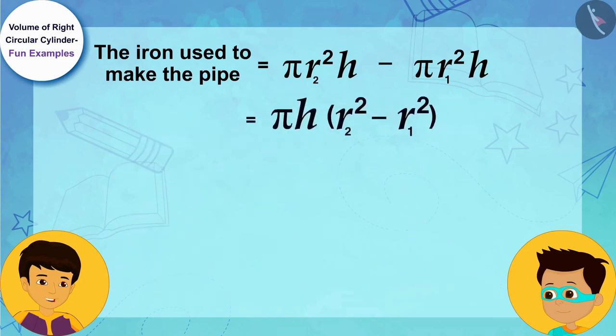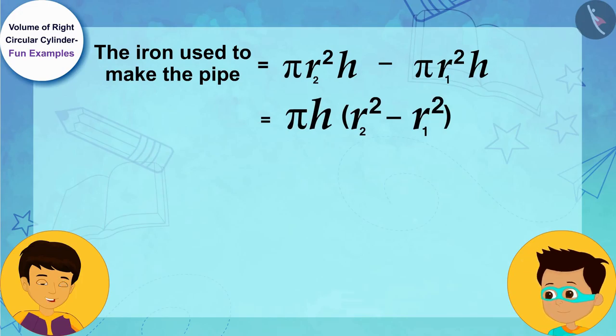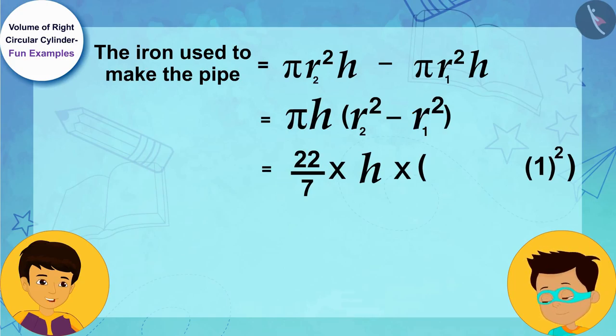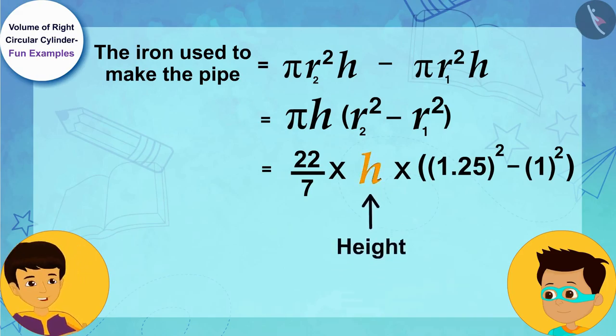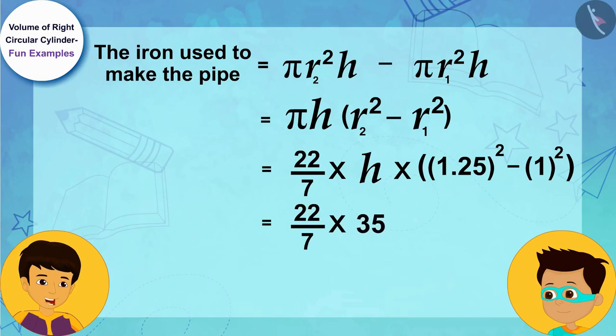Let us now write the radius of the inner cylindrical part, 1 cm instead of r₁, and radius of outer cylindrical part of the pipe, 1.25 cm instead of r₂ respectively. And then also write the height of the pipe, 35 cm instead of h.